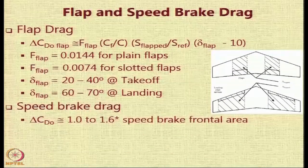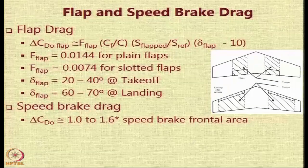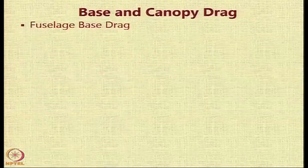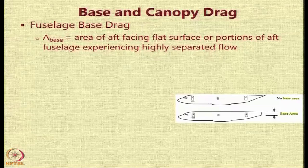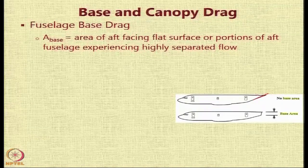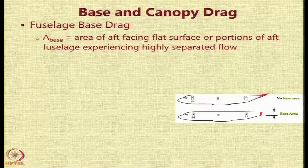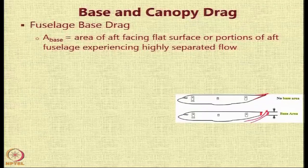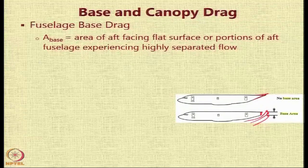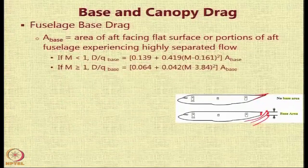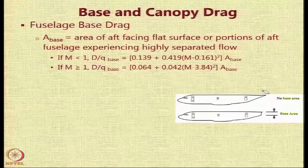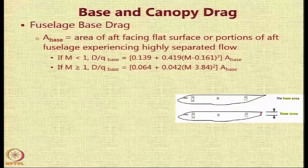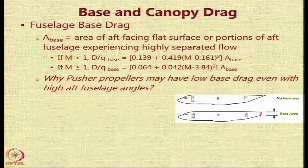Speed brakes create a large amount of drag as they act almost like flat plates projecting into the flow. You can assume delta_CD0 for speed brakes to be nearly 1.0 to 1.6 times the speed brake frontal area. For base drag, in many aircraft the tip of the fuselage is not closed; the abrupt disturbance leads to separated flow and additional drag, calculated using a formula for D/Q as a function of the base area.